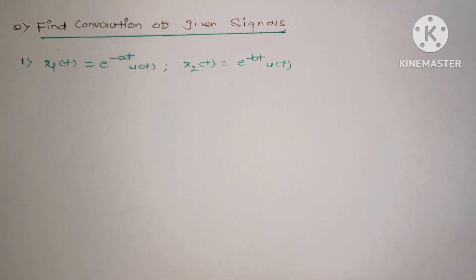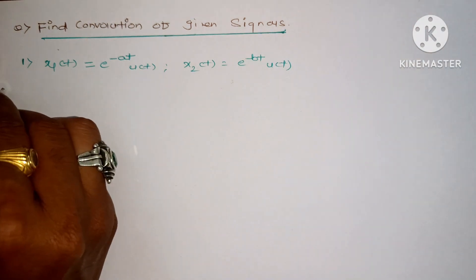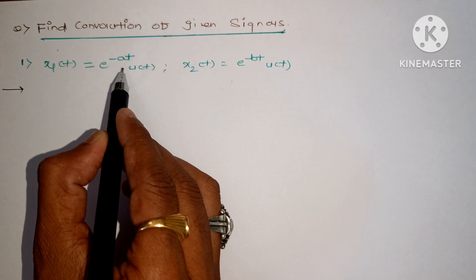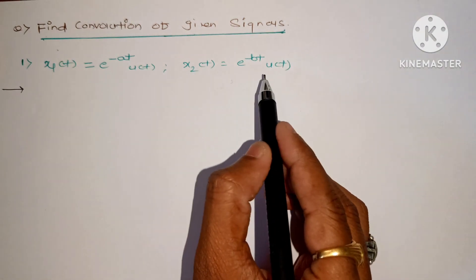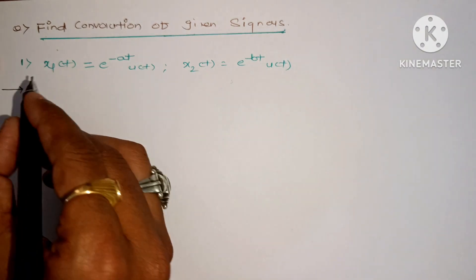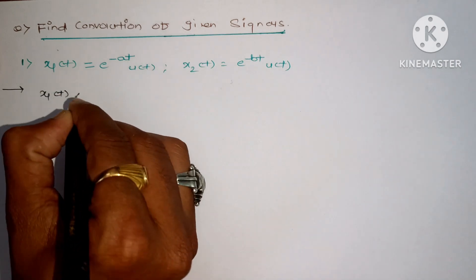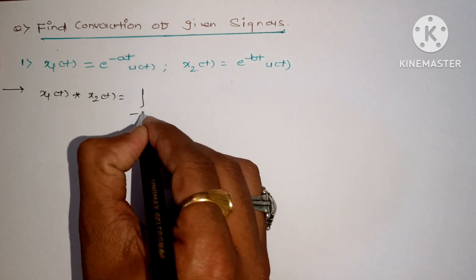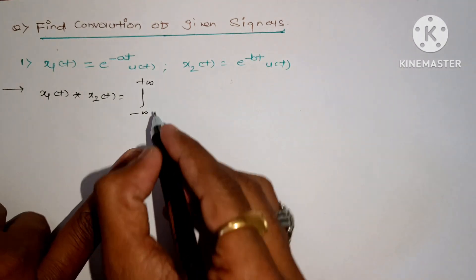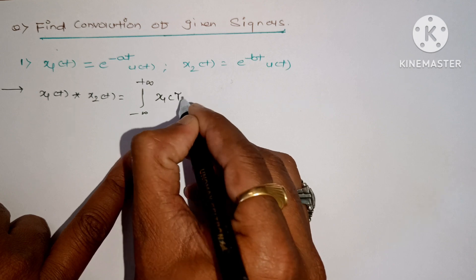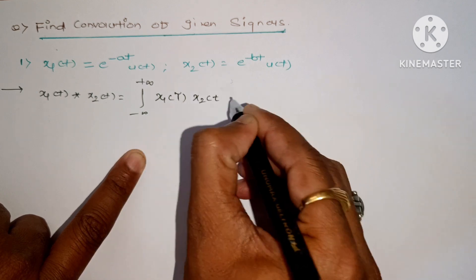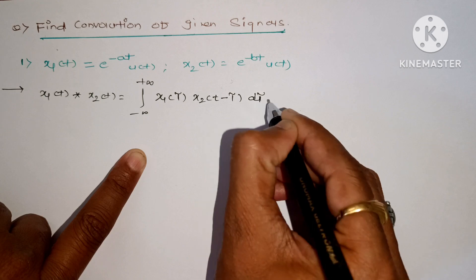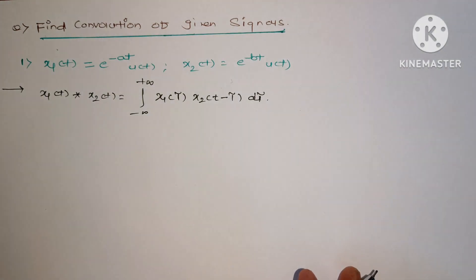In this video we will see how to find the convolution of given signals. The first question involves x1 and x2 in exponential form. The formula for convolution is: x1 convolved with x2 equals the integration of the first function x1(τ) into the second function shifted by the same amount. This is the formula for convolution.